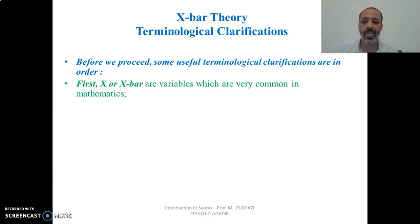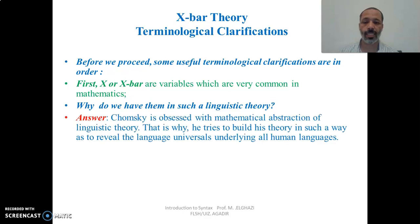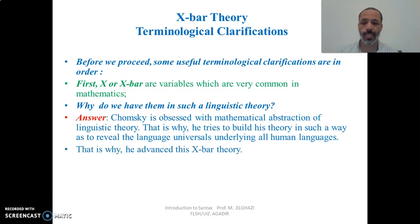Why do we have variables in such a linguistic theory? Chomsky, as you know, in his background was a mathematician and physician. So he is obsessed with the mathematical abstraction of linguistic theory. That is why he tries to build his theory in such a way as to reveal the language universals underlying all human languages. X is a variable which refers to any kind of category. That is why they advanced this X-bar theory.